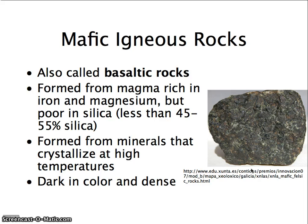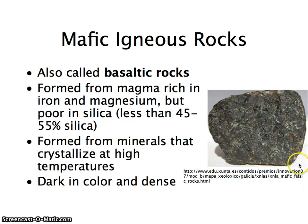We often use two terms interchangeably: basaltic rocks and mafic rocks mean the same thing depending on your textbook. Either one is formed from magma that is rich in iron and magnesium but has very little silica. Because it has so much iron and magnesium, it's very dense. The minerals crystallize at a very high temperature, so they tend to be small crystals and all very dark — one color throughout.